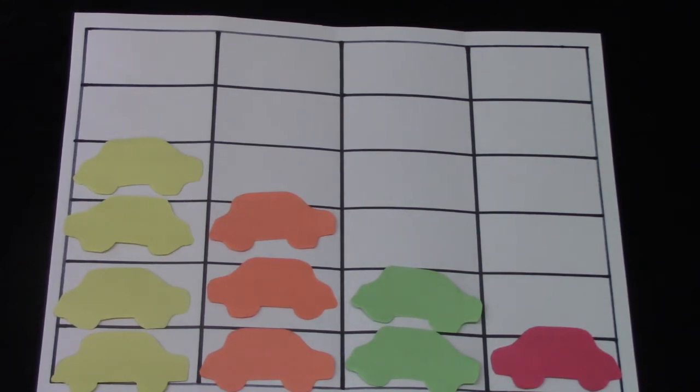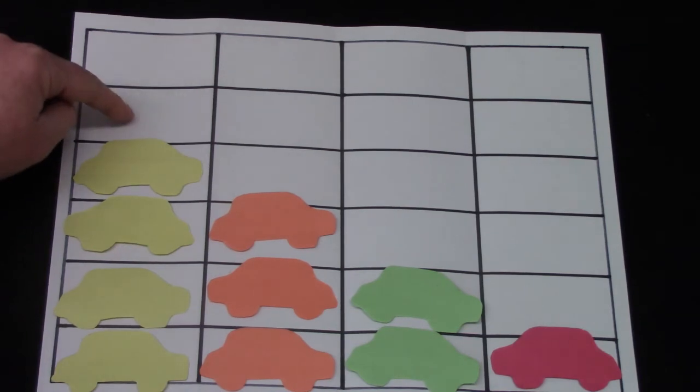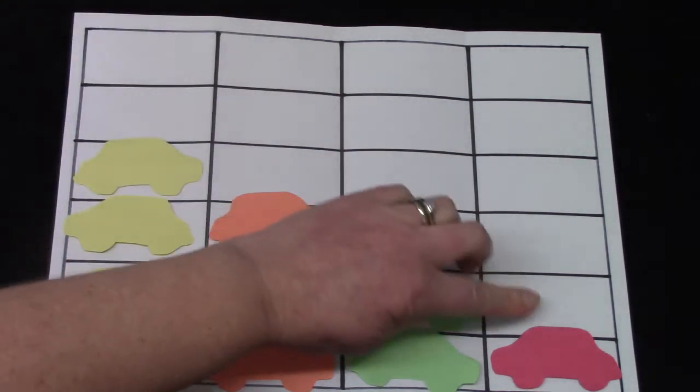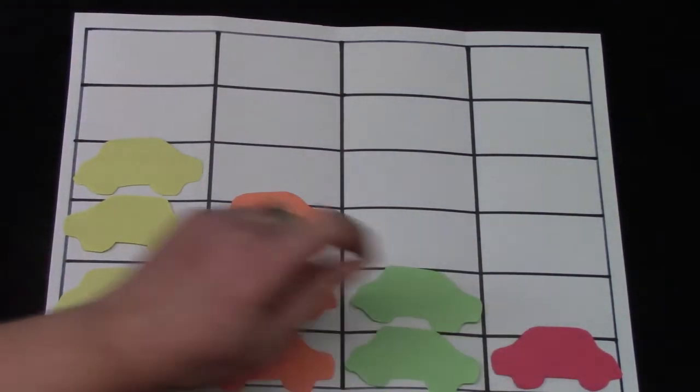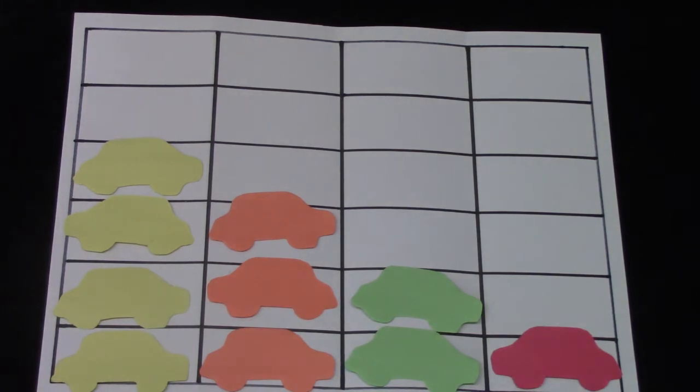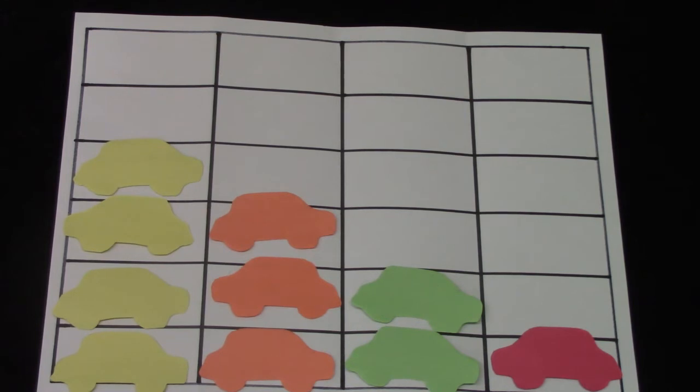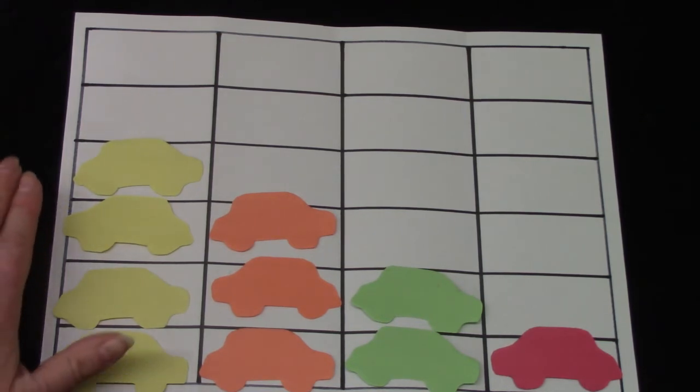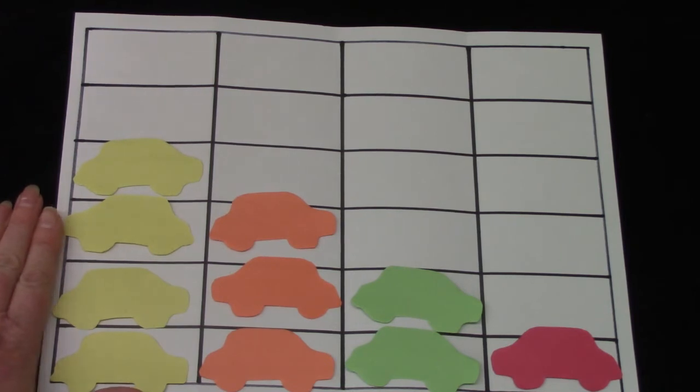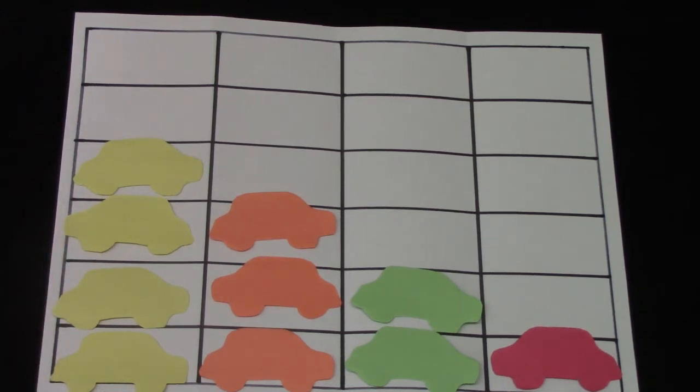On this graph we can see which had the greatest number or the most, and the smallest number, the fewest. Yellow had the most and red had the fewest. When I'm looking at this graph, I know that the yellow are on the left and the red are on the right side of my chart. Have you ever heard of left and right before?